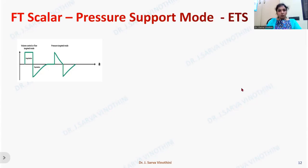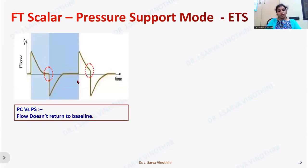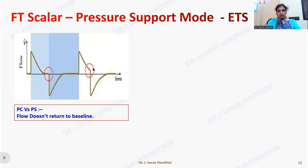How is pressure support mode different from pressure control mode? The difference lies in the expiratory trigger sensitivity. In pressure support mode, the flow does not return to baseline at the same point as in pressure control mode — and this is determined by the expiratory trigger sensitivity that is set by us.